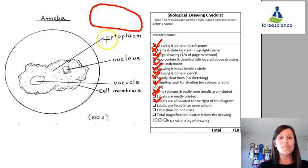Labels are listed in an even column. No, they should be distinctly lined up in a column. So they will not get the mark for that.